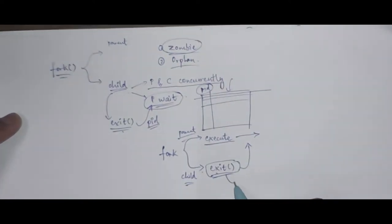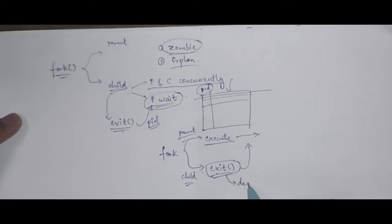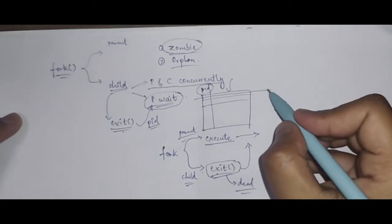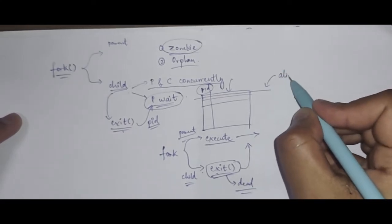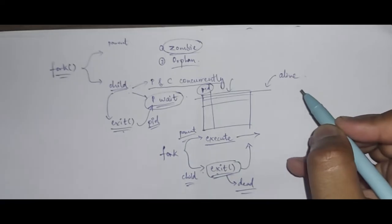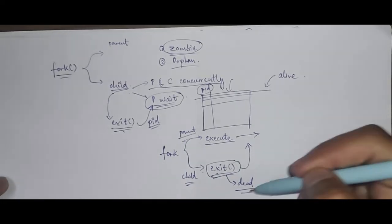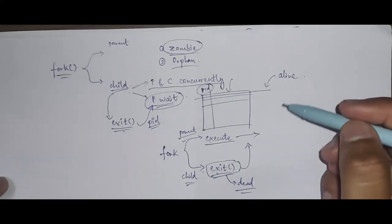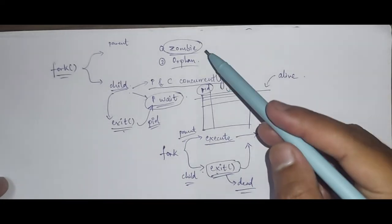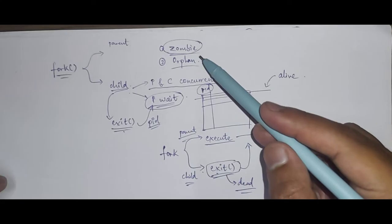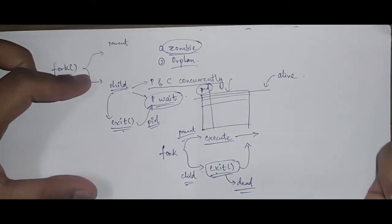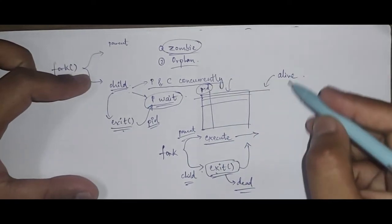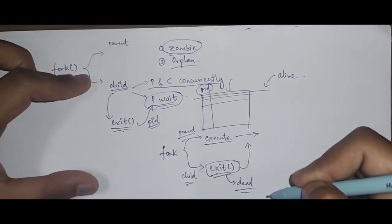Such a process — whose entry is in the process table but which has terminated by calling exit — becomes a zombie. It is dead because it called exit, but it is kind of alive because its entry is still in the process table. Since it's in both states, dead and alive, it is said to be in the zombie state.